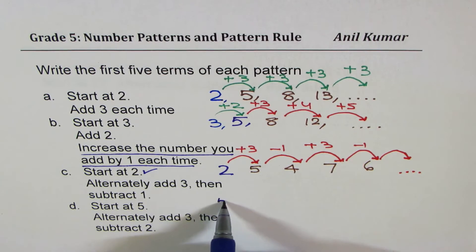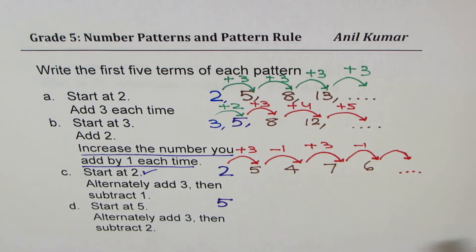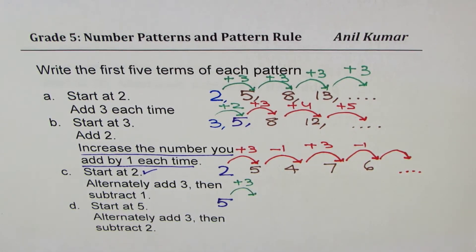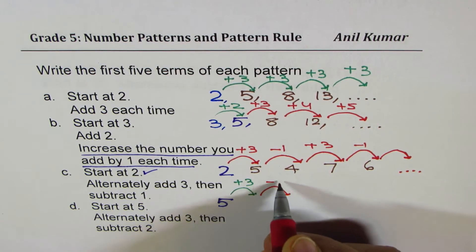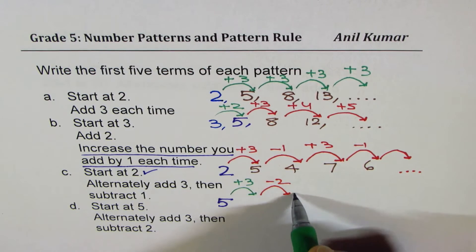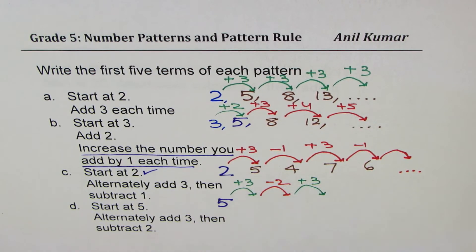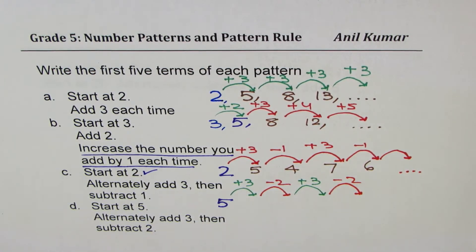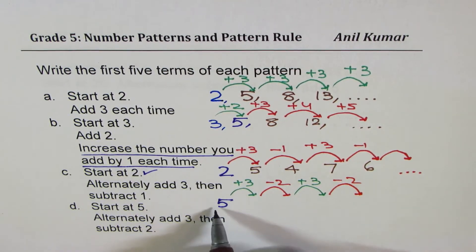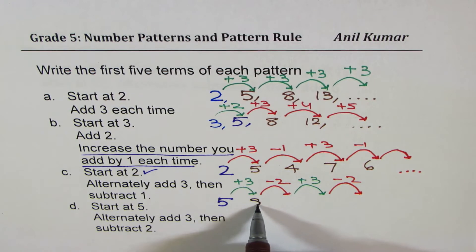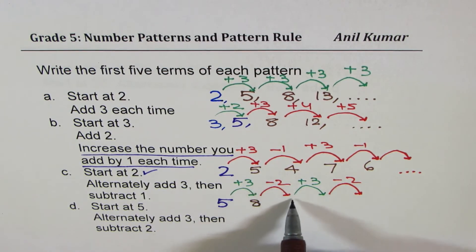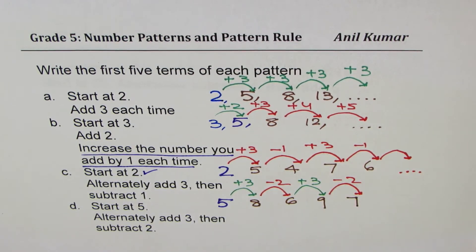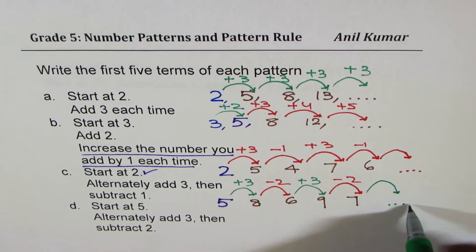Start at five means start at five. Alternately add — so let's say plus three, then subtract two. First get into the trend and see how it works before getting into numbers. So the trend is: add three, then subtract two, alternating. Now do the math: five plus three is eight, eight minus two is six, six plus three is nine, nine take away two is seven. Figure out the next number and write it down.